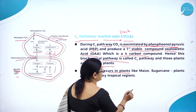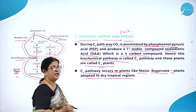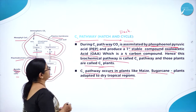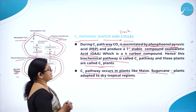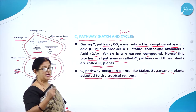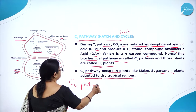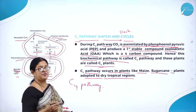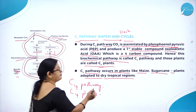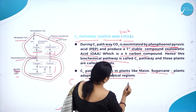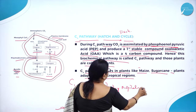C4 pathway occurs in plants like maize, then sugarcane — plants adapted to dry tropical regions. Such plants where C4 pathway takes place are called C4 plants. C4 plants like maize and sugarcane are particularly adapted to dry tropical regions.